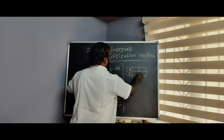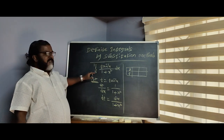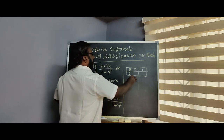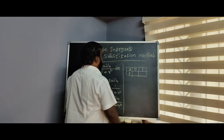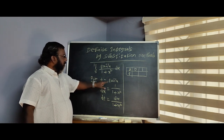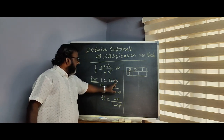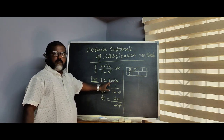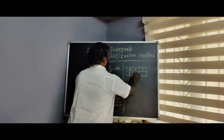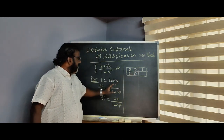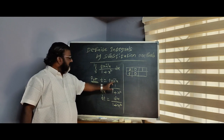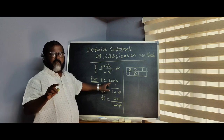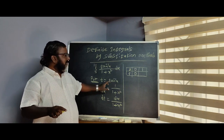The x limits are 0 to 1. Changing into t: when x equals 0, t equals tan inverse 0, which is 0. When x equals 1, t equals tan inverse 1. Since tan 45° equals 1, and 45° equals pi by 4, therefore t equals pi by 4.